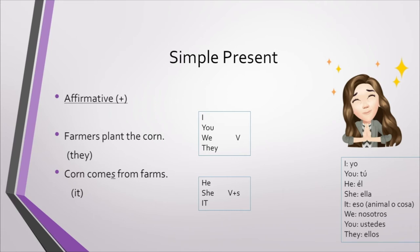Para afirmaciones, affirmative sentences. Tenemos una regla importante. Formamos la oración: sujeto, verbo, complemento. Subject, verb, complement. Y si el sujeto es he, she, o it, debemos agregar una S al verbo. Recuerden que el verbo es la acción. Correr, saltar, plantar, venir.